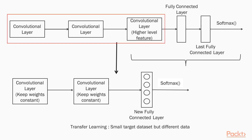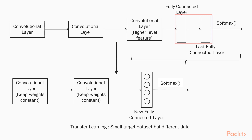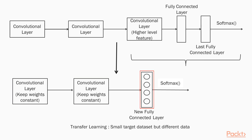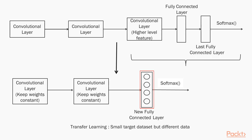The first step is to slice most of the initial layers of the network. Then we add to the remaining pre-trained layers a new fully connected layer that matches the number of classes of the target dataset. After that, we randomize the weights of the new fully connected layer and freeze all the weights from the pre-trained network, training the network to update only the weights of the new fully connected layer. Since the dataset is small, overfitting is still a concern, so we keep the weights of the original pre-trained network fixed.